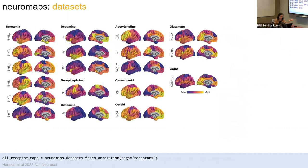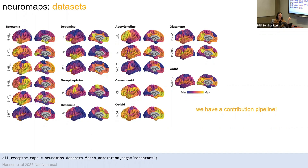I'm devoting an entire slide to receptors because I was working on a receptor project at the same time as Neuromaps, and was involved in putting together receptor maps from different institutions to get an atlas of 19 different receptor densities across the brain. The data is also available in volumetric form, so it exists in the subcortex too. We do have a contribution pipeline — the datasets are naturally biased toward the history of neuroscience and our lab's interests, so if something is missing that you'd want to include, we have a pipeline for that.